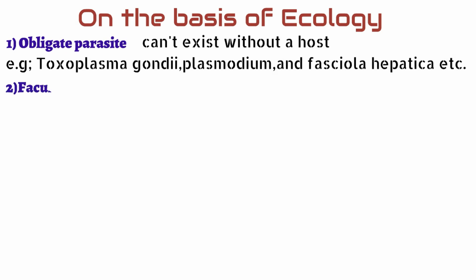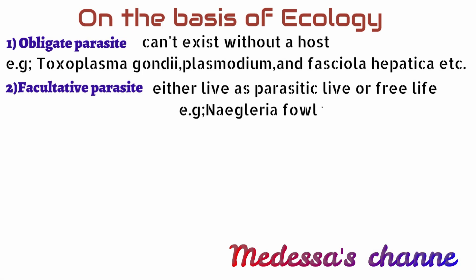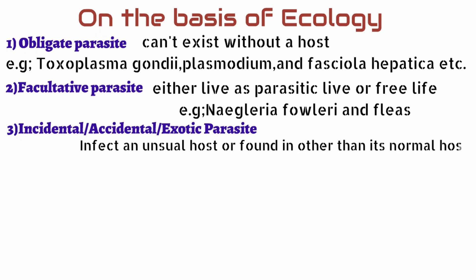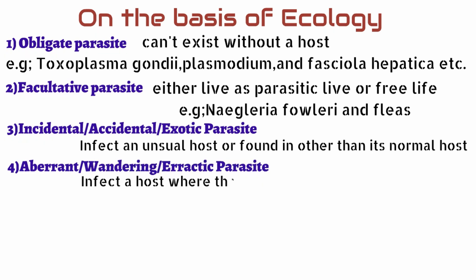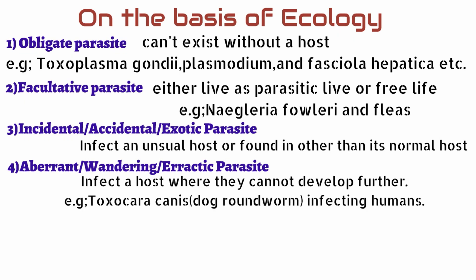Facultative parasites are organisms which may either live as a parasitic form or as a free-living form, for example Strongyloides and fleas. Incidental, exotic, or accidental parasites are parasites found in other than their normal or usual host. Number four is the aberrant parasite — a parasite which infects a host where it cannot develop further. These are known as aberrant parasites.